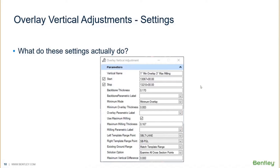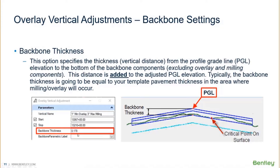Let's take a look at some of these settings. There are a lot of different settings in here, so it's important to understand what they do. The first one is the backbone thickness. The backbone thickness specifies the thickness from the profile grade line elevation to the bottom of the backbone components — that represents the actual thickness of your pavement buildup. That thickness is added to the adjusted TGL elevation. Typically, the backbone thickness is going to be equal to your template pavement thickness in the area where your milling and overlay will occur.